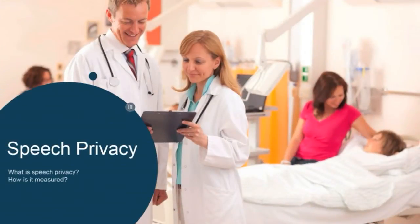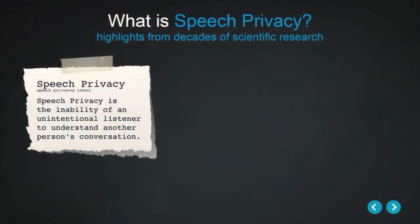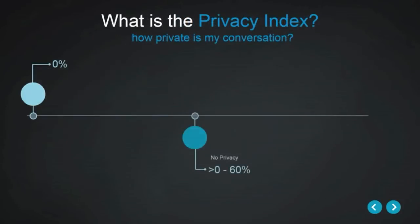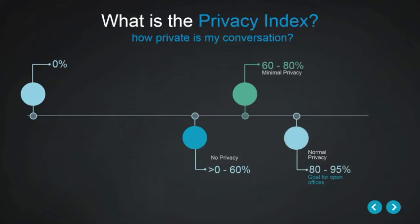Objective 3: Speech Privacy. Here is a relatively straightforward definition: speech privacy is the inability of an unintentional listener to understand another person's conversation. 0–60% represents no privacy at all. 60–80% represents minimal privacy. 80–95% is what we call normal privacy.